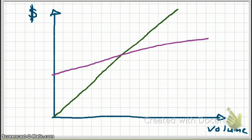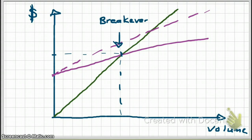If our variable cost per unit increases, the line gets steeper because our slope just increased. Before the change our breakeven point was here, but after the increase in variable costs our breakeven point increased, so now we have to sell more units in order to break even. If instead our variable cost per unit decreased, the mixed cost line would be flatter, and therefore we would have fewer units to sell in order to break even.